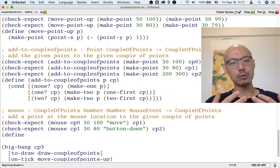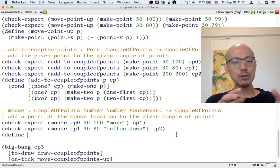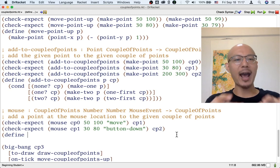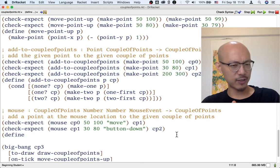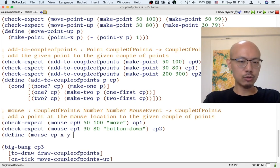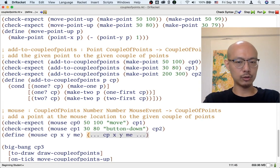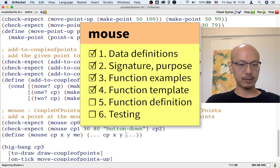You might think that in order to write this function, we need to use the template for processing a couple of points, or a template for processing a mouse event, which is an enumeration template. But actually, here, we're not really looking inside the couple of points. We're just passing it to add-to-coupleofpoints. So, that's defining our mouse function by function composition. We're also not really caring here about which mouse event it is. We're just ignoring the mouse event, in fact. So, we don't actually need to write a very long template. We just need to remind ourselves that we have these things to use. This is good enough for a template for this function, because we're just going to use function composition to finish defining it. We don't even need ME, because again, I'm going to ignore the mouse event.